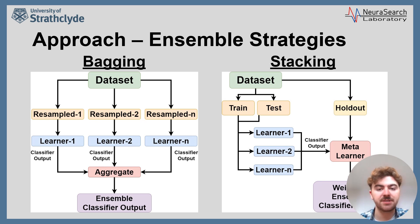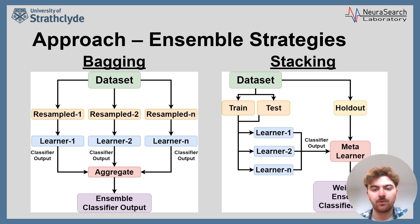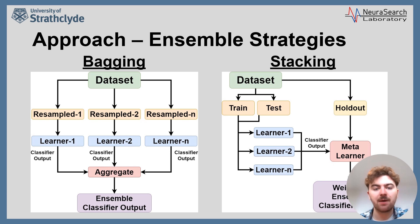On the other hand, stacking, also known as stack generalisation, begins by splitting the training data into two subsets: one used to train each learner, and one used to test each of the learners to obtain their predictions. These predictions are then used to train a meta-learner. The idea behind this is to weigh the predictive outputs from each model, as some learners may generalise or overfit the data more than others. The final test set is then supplied to each member of the ensemble, where each learner's predictions are passed to the meta-learner to weigh the significance of each learner's outputs and select the most appropriate class.